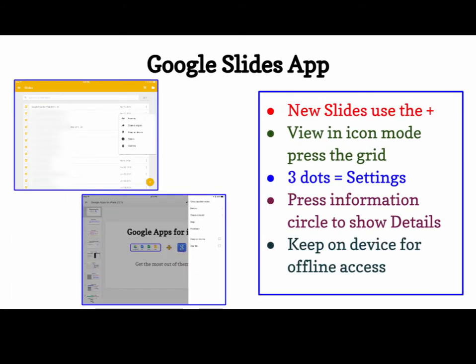Google Slides app is very similar to the other ones. Tap the plus sign for new slides. You can view in icon mode, and the three dots give you settings. You can press the information circle to show details, and you can put a checkbox in 'keep on device' for offline access.